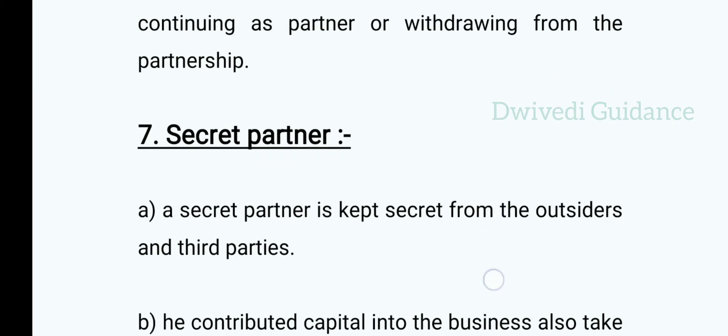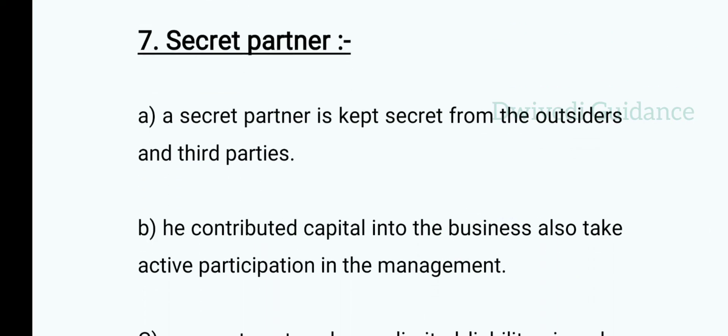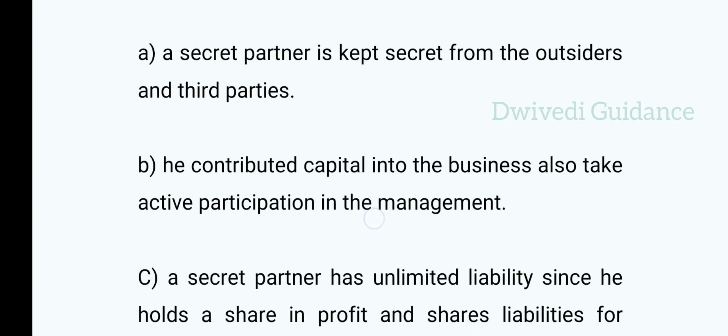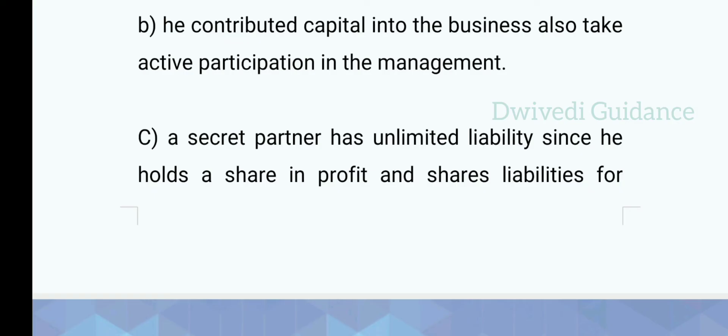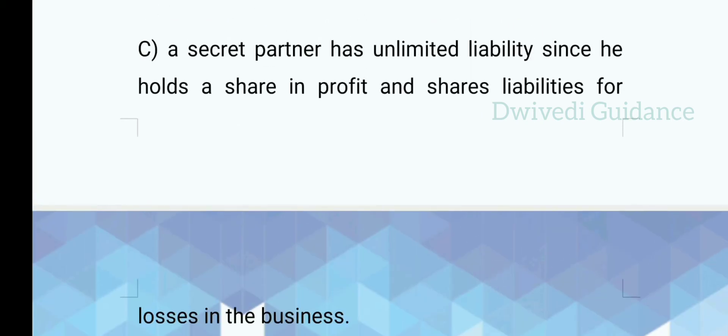Now, who are secret partners? A secret partner is kept secret from outsiders and third parties — his name is not disclosed. Unlike a nominal partner whose name is associated with the firm, the secret partner's name is not disclosed. He contributes capital into the business and also takes active participation in the business, but his name is simply not revealed. A secret partner has unlimited liability since he holds a share in profit and shares liability for losses in the business.